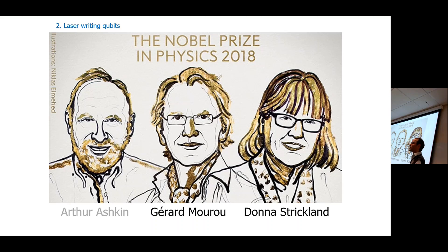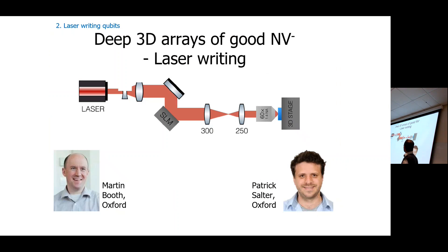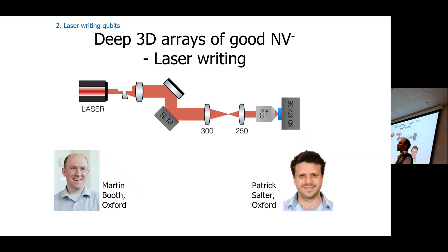Now for the quantum computing. Two of the 2018 Nobel laureates pioneered high-power ultra-fast lasers. Patrick Salter and Martin Booth in Oxford, working with Jason Smith, used one of these ultra-fast lasers to put damage into a diamond — called laser writing. That damage creates vacancies — missing carbons — and then we can anneal the diamond to make nitrogen vacancy centers exactly where we want them using this laser writing technique.